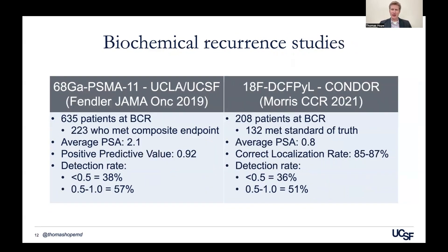There are also trials in the biochemical recurrence setting — in the DCF-PYL and PSMA-11 setting. The main point is that as PSA falls, the detection rate goes down. When you have a lower PSA, there's a lower volume of disease, and in that setting it's harder to localize the sites of disease.